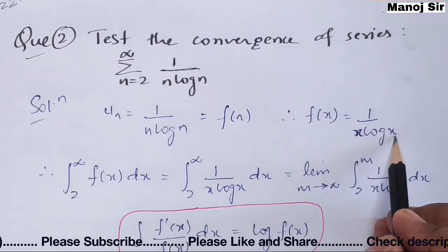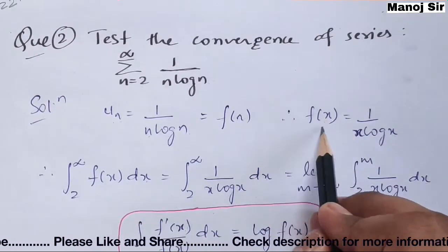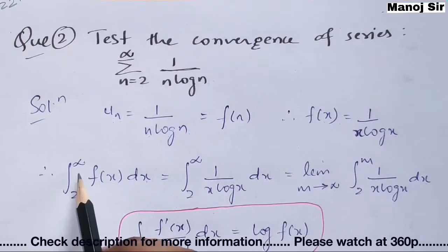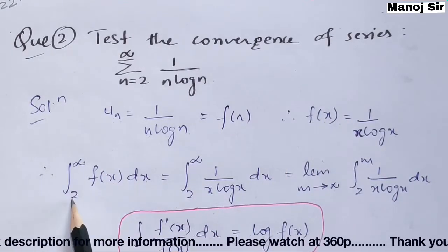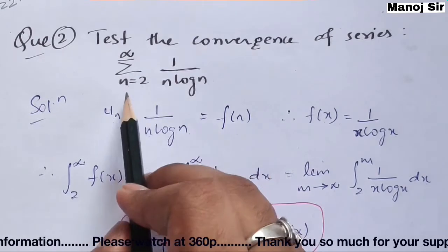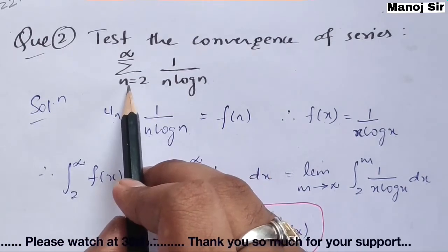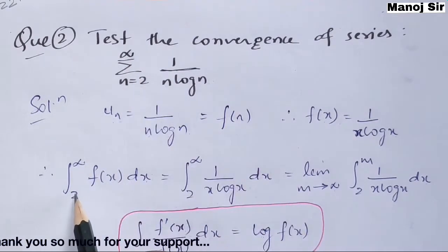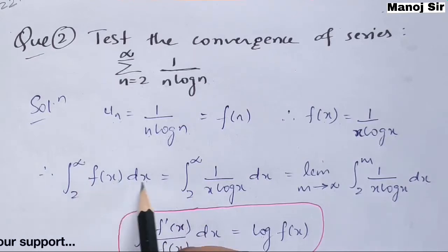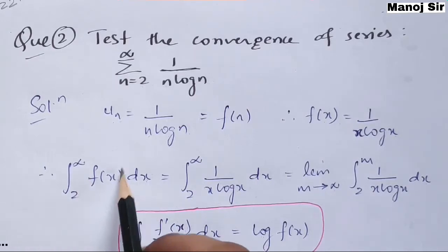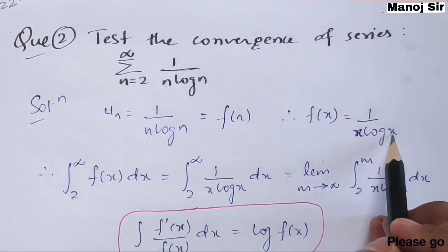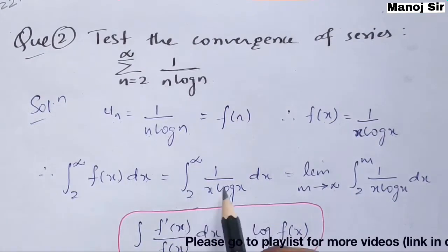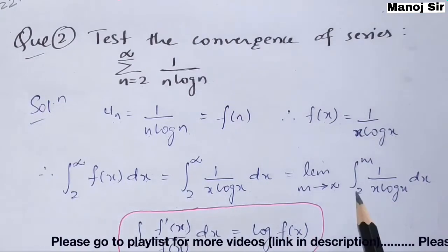So f(x) becomes 1 upon x·log x. Now since we have f(x), we can set up the integral. The integration goes from 2 to infinity — you can see the limit goes from 2 to infinity — so we write: integration from 2 to infinity of f(x) dx, which is integration from 2 to infinity of 1 upon x·log x dx.